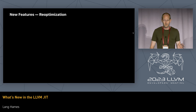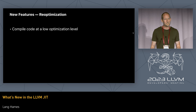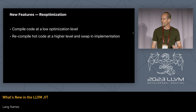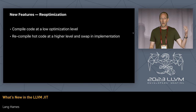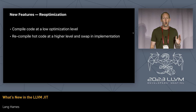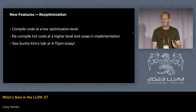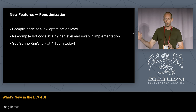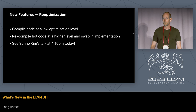The last new feature I'll mention briefly is re-optimization — the idea that you compile code at a low optimization level to get it up and running quickly, then re-optimize at a higher level and swap in the implementation to get better runtime performance. I'm not going to go into detail because Sunho Kim has a whole talk on that at 4:15 pm today. If you're interested in generic re-optimization in the LLVM JIT APIs, go check out Sunho's talk.